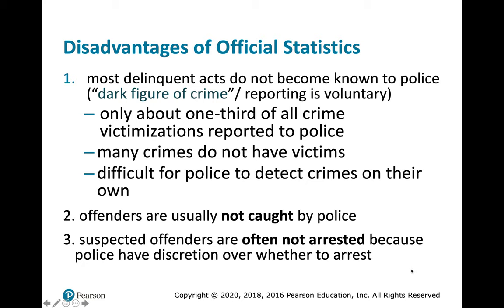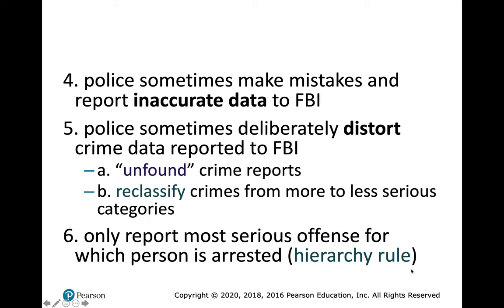The disadvantages include the dark figure of crime — only about a third of all crime victimizations are reported to the police. Many crimes have no victim to report them. It's also difficult for police to detect crimes on their own; offenders often aren't caught, and even if identified they might not be arrested due to police discretion or lack of evidence. Police sometimes make data entry mistakes — for example, NIBRS data on statutory rape has listed offenders as less than one day old, clearly a data entry error.